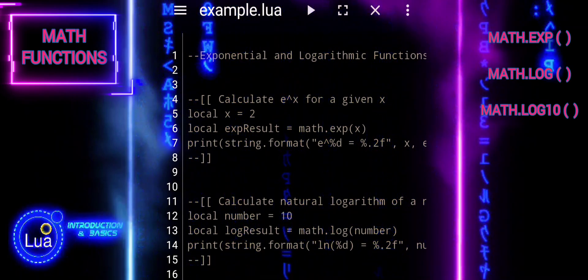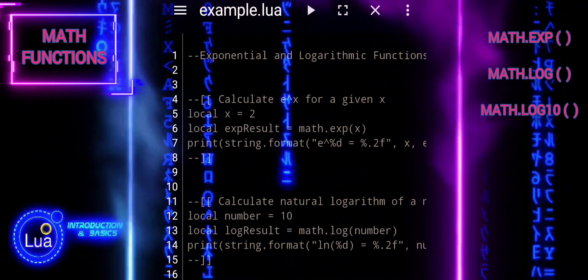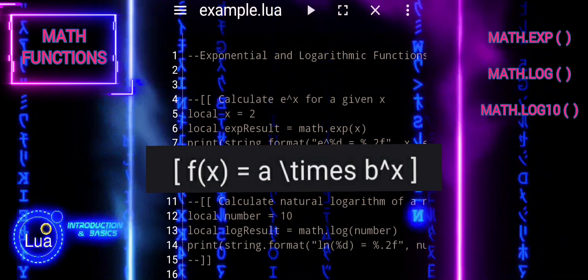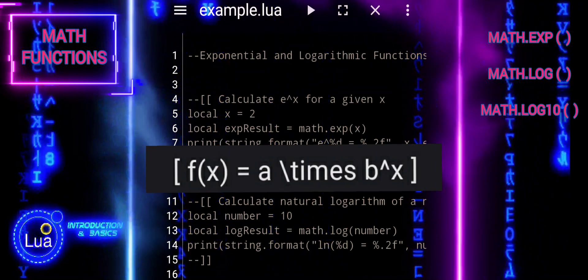An exponential function is a mathematical function of the form f(x) = a times b^x, where a and b are constants, with b being the base of the exponential function.